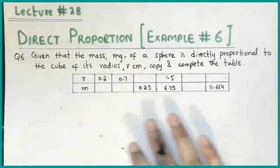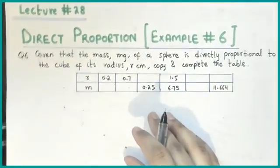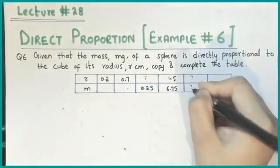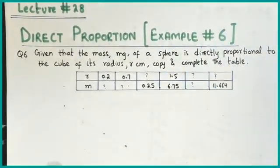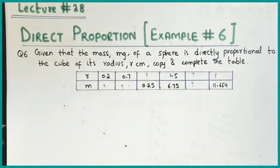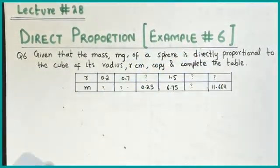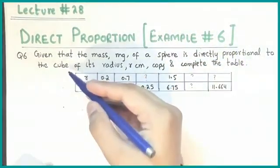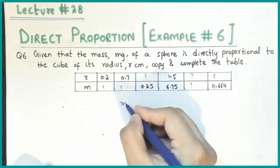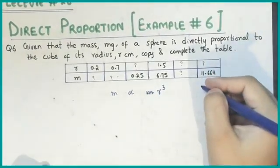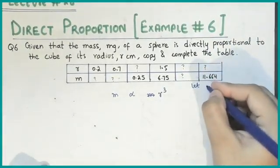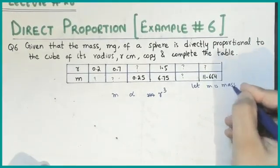In this example we are saying that you have to complete a table that has some unknowns — some spaces that are unknown and you need to find these. First of all we have to find a general equation. We need to read our question. The question is: given that mass of a sphere is directly proportional to the cube of its radius. Let m be mass and r be radius.